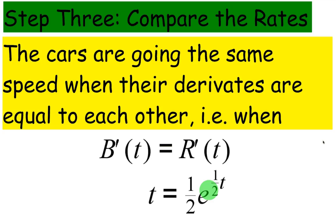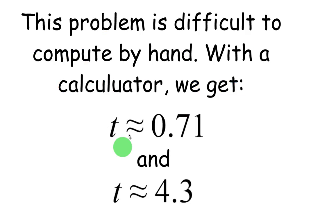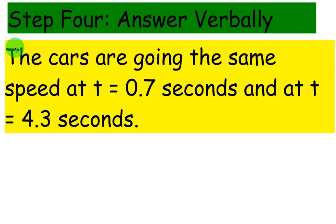And actually twice. There are two times where these cars are going the same speed. t is approximately 0.71, so right before one second, and also t is approximately 4.3. Those cars are going pretty much the same speed. So the cars are going the same speed at t equals 0.7 seconds and at t equals 4.3 seconds.